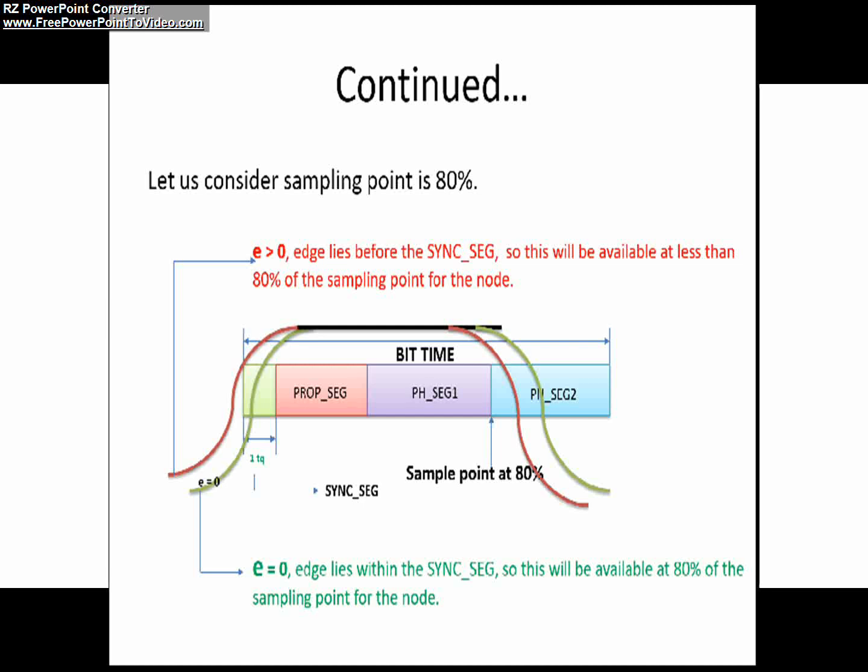The edge lies before the synchronization segment, not within this time quanta. So this will be available at less than 80% of the sampling point for the node or receiver. Therefore edge phase error E greater than zero here.